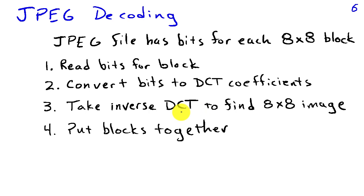We'll take the inverse discrete cosine transform to find the 8x8 image associated with that block. And then, having done that for all the blocks in the image, we simply stitch the individual 8x8 blocks back together to form the complete image.